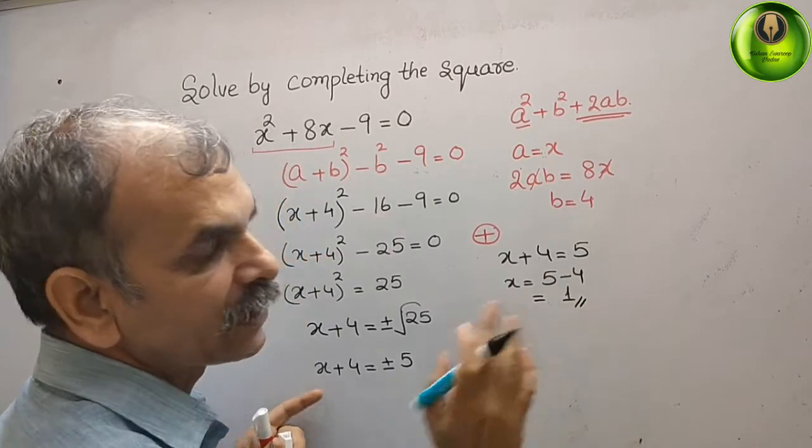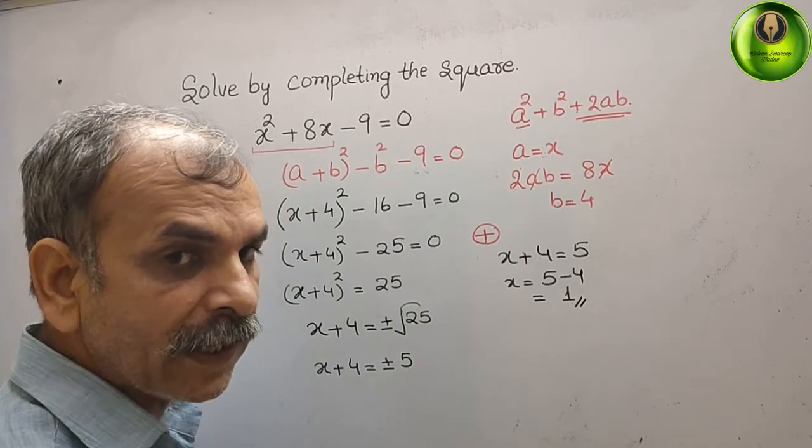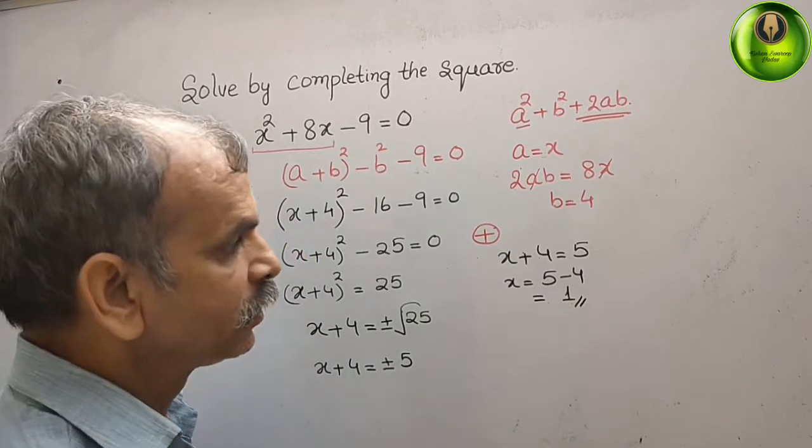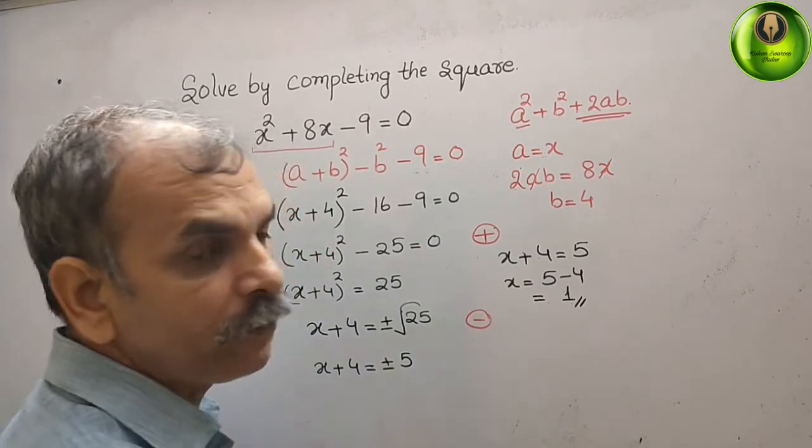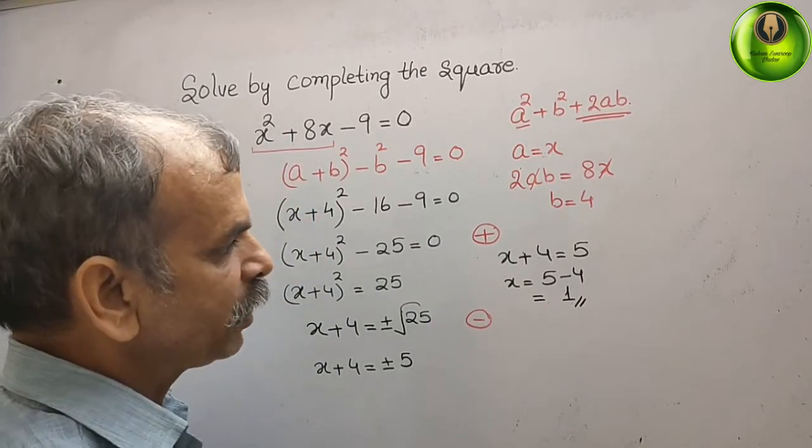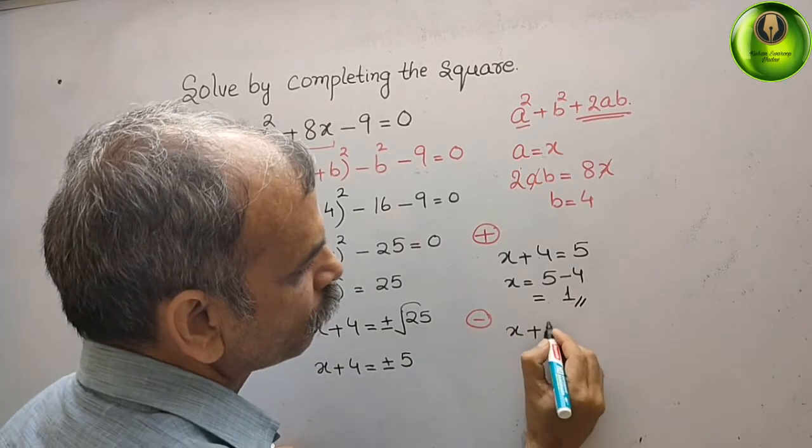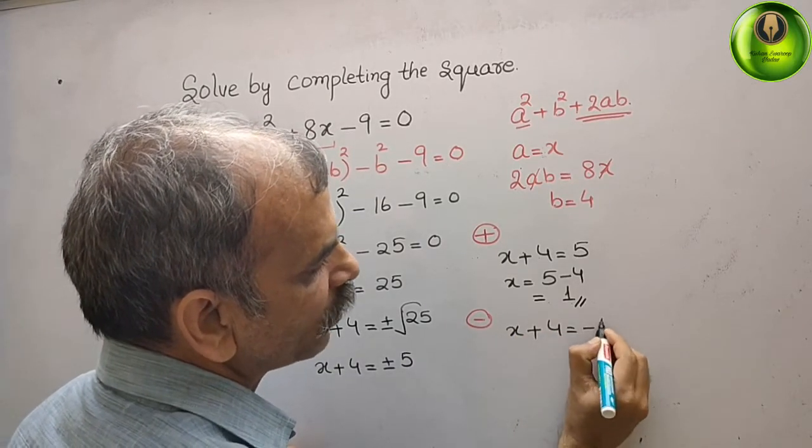That will be 1. So next we will take minus. Now we will take the minus sign. What we will get? x + 4 is equal to minus 5.